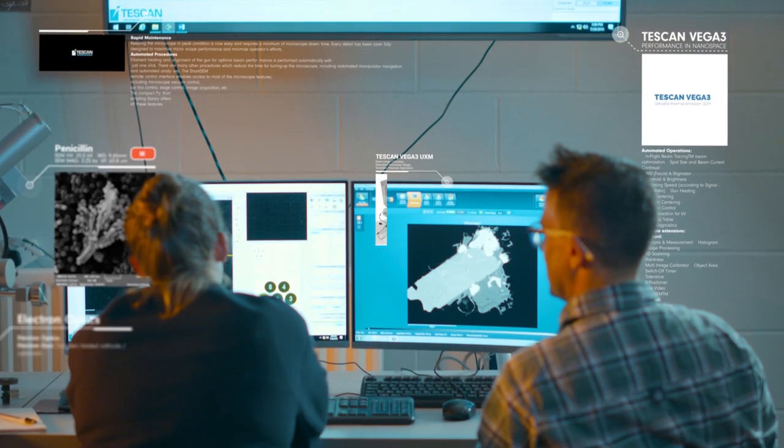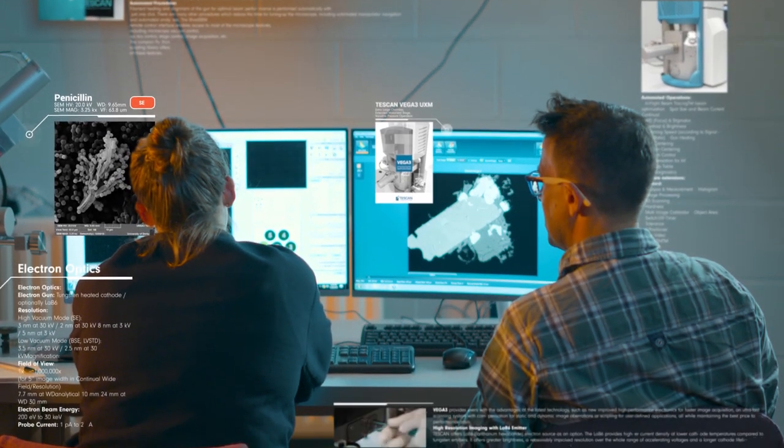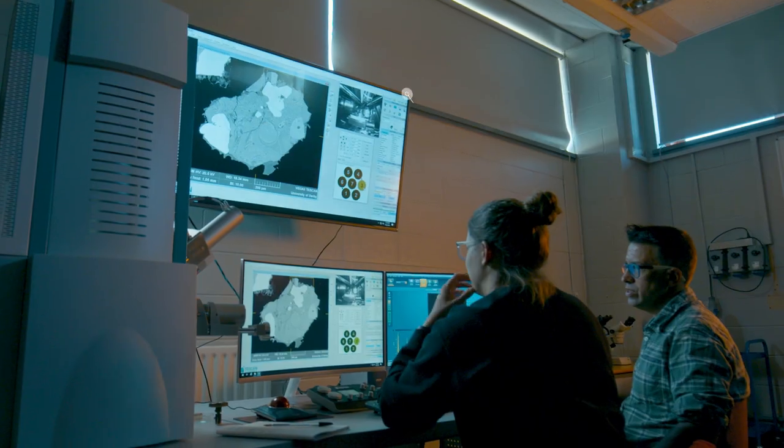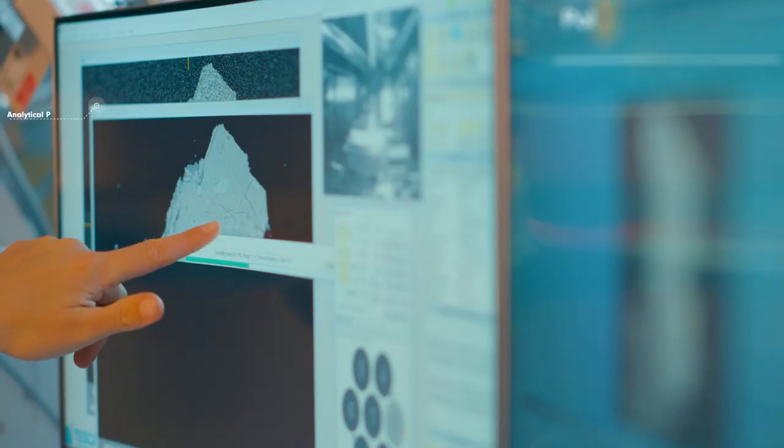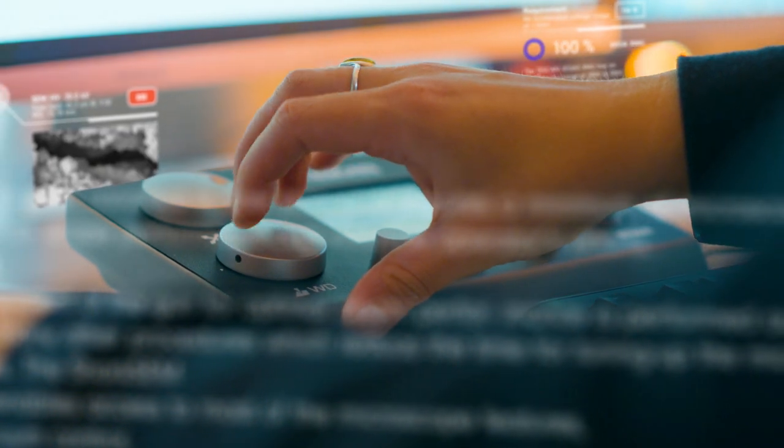We have here a Tescan 3 scanning electron microscope and this is used to magnify specimens from a low magnification up to a very high magnification using a depth of field that enables us to see the whole sample with high resolution.